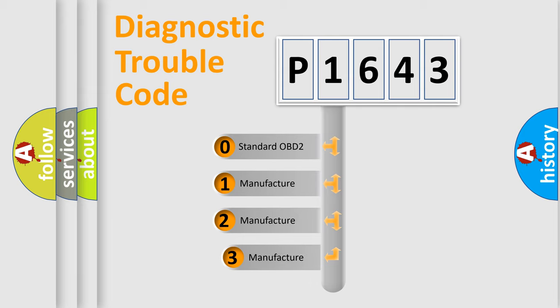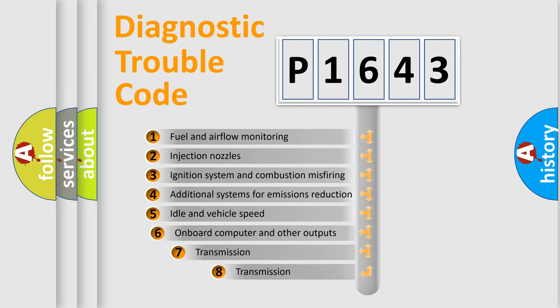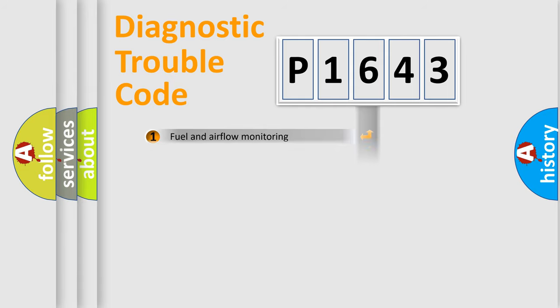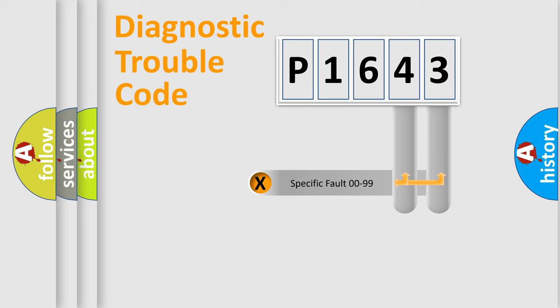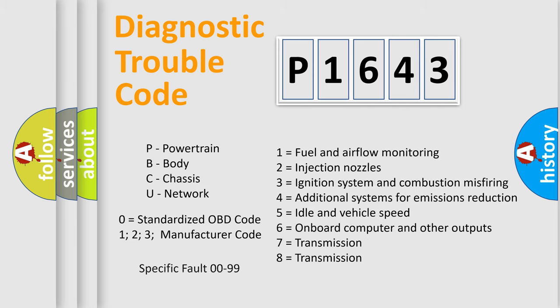If the second character is expressed as zero, it is a standardized error. In the case of numbers 1, 2, or 3, it is a more manufacturer-specific expression of a car-specific error. The third character specifies a subset of errors. This distribution is valid only for the standardized DTC code. Only the last two characters define the specific fault of the group, and such division is valid only if the second character code is expressed by the number zero.